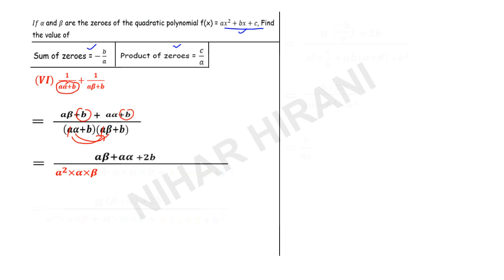Now I will erase this. A alpha will be multiplied by b, so that will be a alpha b.